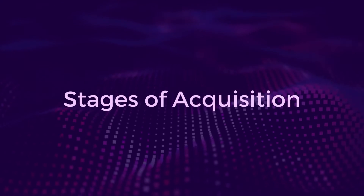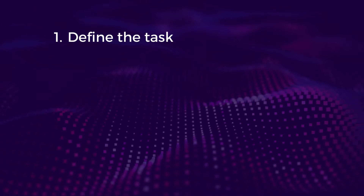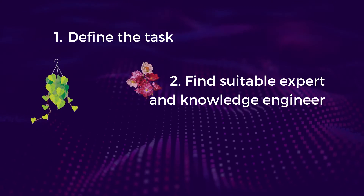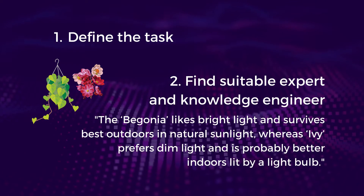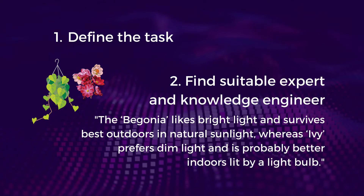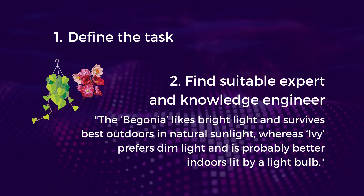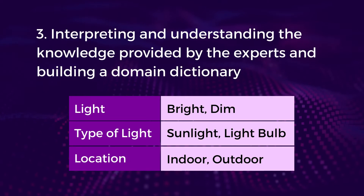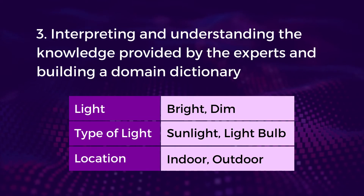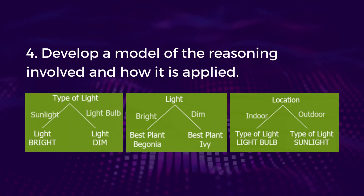Regarding stages of acquisition — let's say we want to build an expert system on plants. We first need to define the task, then find a suitable expert and a knowledge engineer and get the expert's statement. For example, the begonia likes bright light and survives best outdoors in natural sunlight, whereas ivy prefers dim light and is probably better indoors lit by a light bulb. Next, the knowledge engineer will interpret and understand the knowledge provided by the experts and build a domain dictionary. And finally, develop a model of the reasoning involved and how it is applied.